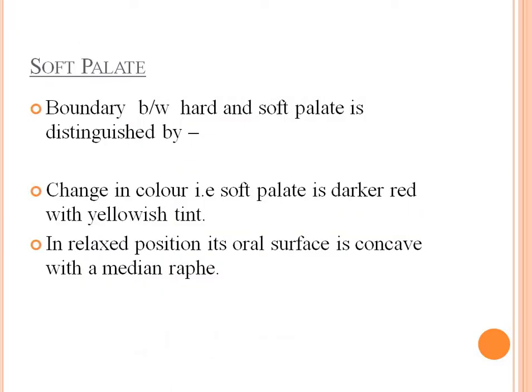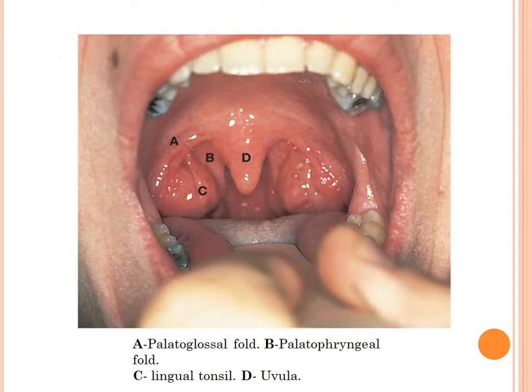The soft palate: the boundary between the hard and the soft palate is distinguished by a change in colour — the soft palate is darker red with a yellowish tint. In the relaxed position, its oral surface is concave with a median raphe. Here is the uvula, the palatoglossal fold, and the palatopharyngeal fold.